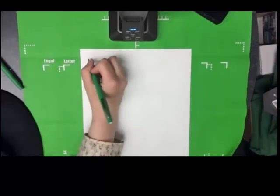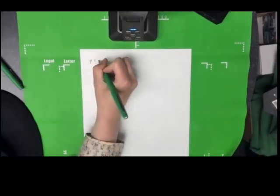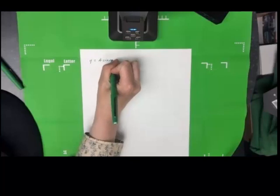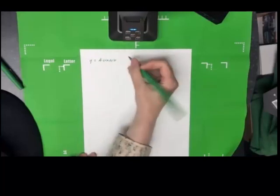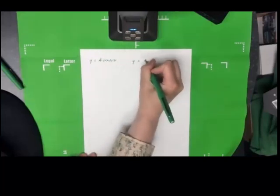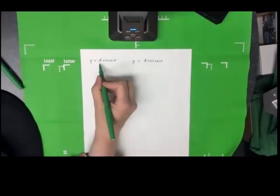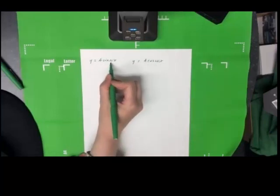Today we're going to look at graphs of the form y equals a sine wx and y equals a cosine of wx, where the absolute value of a is the amplitude and 2π over w is the period.